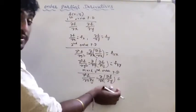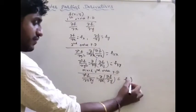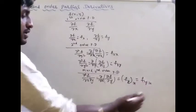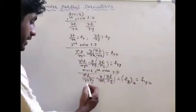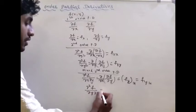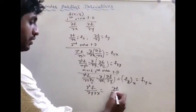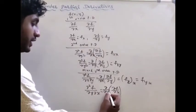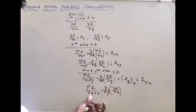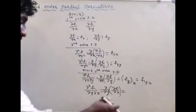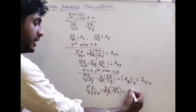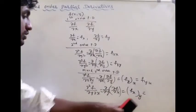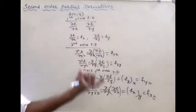The meaning is: first with respect to y, the partial derivative is taken. Then the function is again differentiated with respect to x. Similarly, we can write dou square f by dou y dou x — meaning first with respect to y, then with respect to x partial derivative.